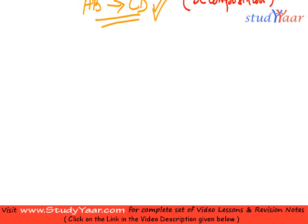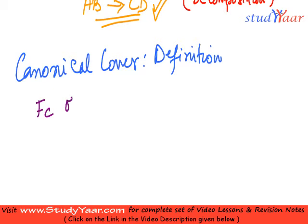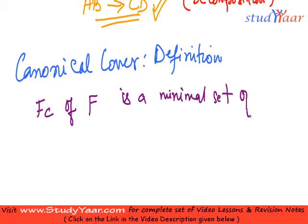Now that I have told you the definition of extraneous attributes, we are going to learn what is the exact definition of a canonical cover. A canonical cover FC of a set of attributes F is a minimal set of FDs equivalent to F.